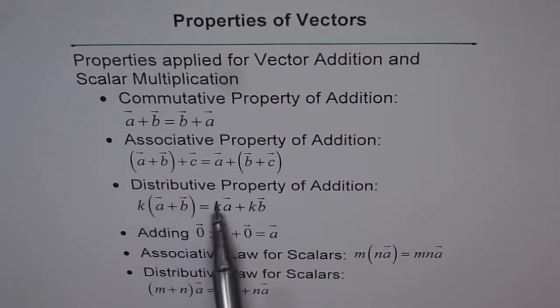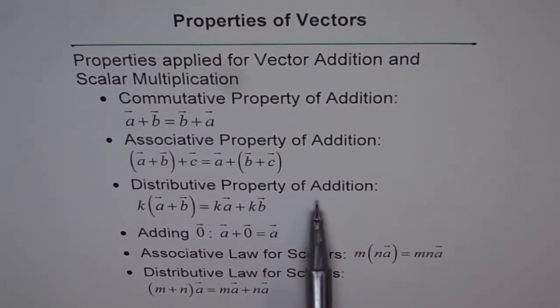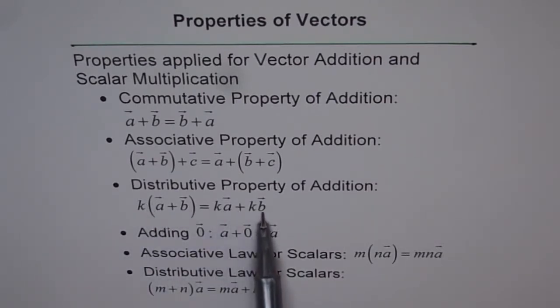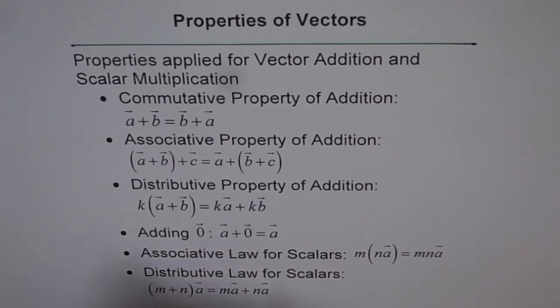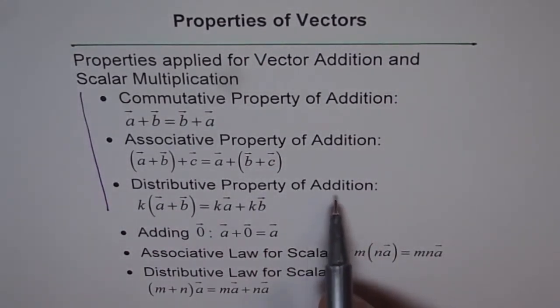Then we have distributive property of addition. Note, important thing here is that we have vectors as addition in the bracket. You see, vectors are being added in the bracket, and they are being multiplied by a scalar. And then that is distributed, and we get K times vector A plus K times vector B. It is kind of important to understand this. And these are actually properties of addition, vector addition, correct?